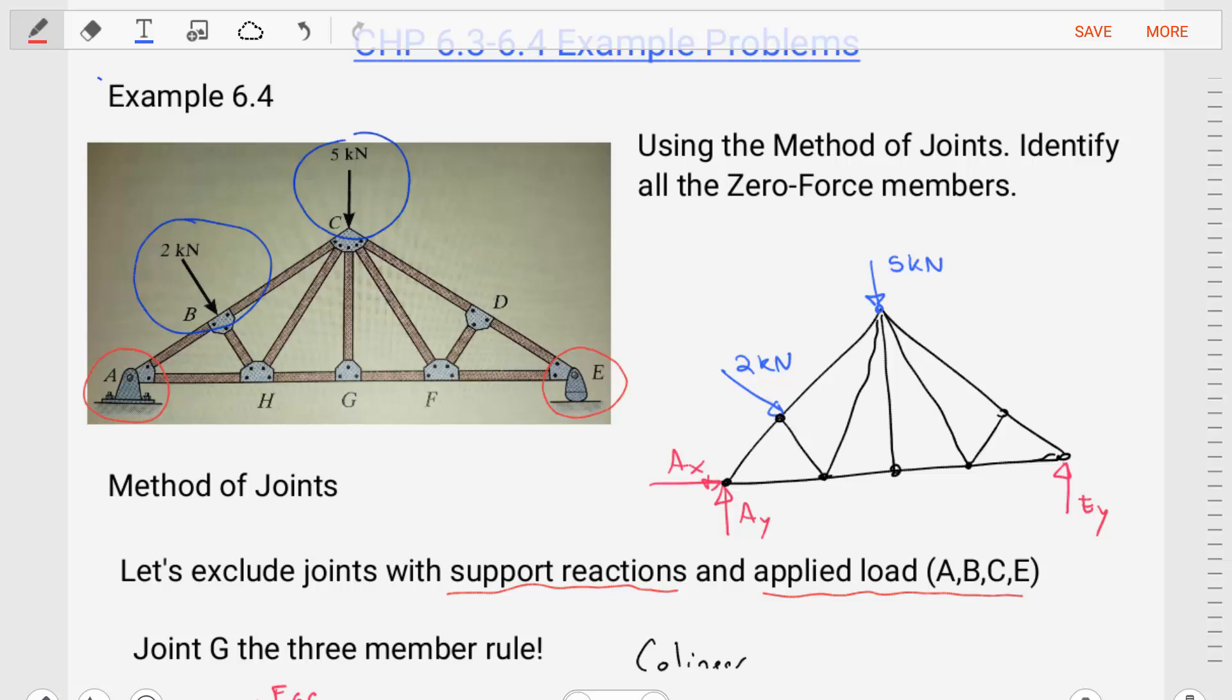What we need to do is we need to apply the method of joints to identify all the zero force members within this structure. So let's start with that by excluding the locations where we have support reactions, as well as those locations where we have that applied loading. And then for all these remaining joints, joint D, F, G, and H, we want to apply the method of joints and we want to see, do we have zero force members at the joints?